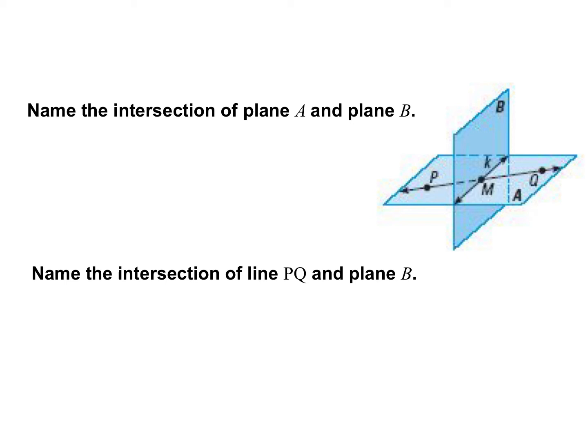And here we start by saying, name the intersection of plane A and B. So we're looking at where do these two planes intersect? Or where do they cross? What do they share in common? Where do they meet? And notice how here, I'm going to change colors for this piece, they intersect right here in the middle. Whenever two planes intersect, they will intersect at a line. So they actually intersect at line K.